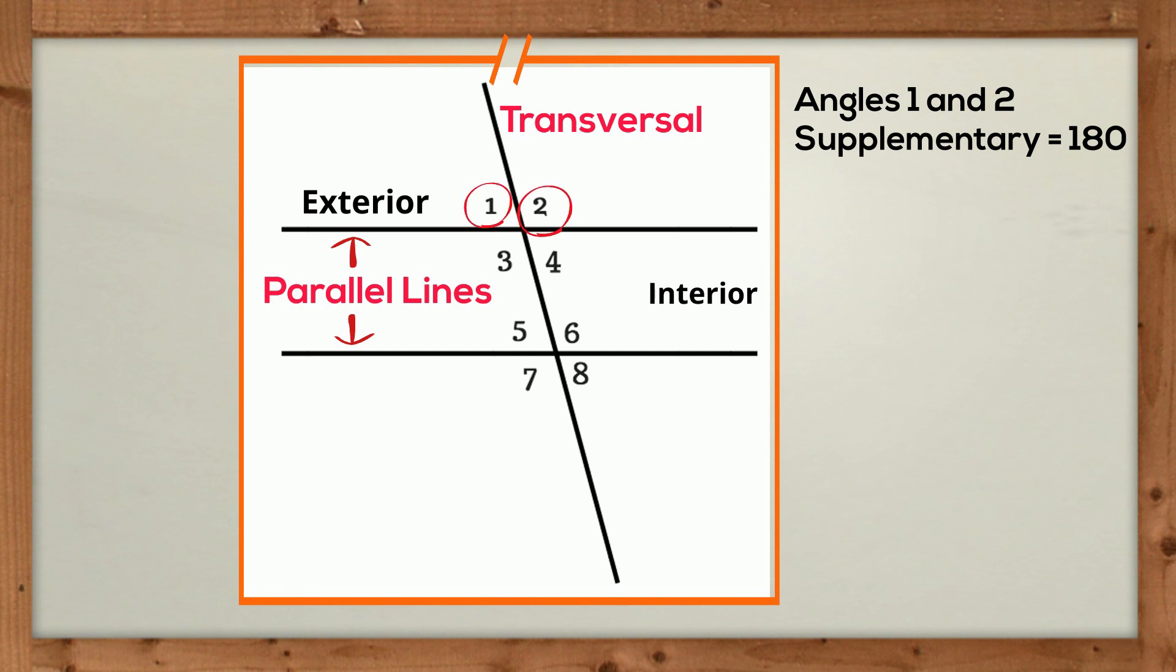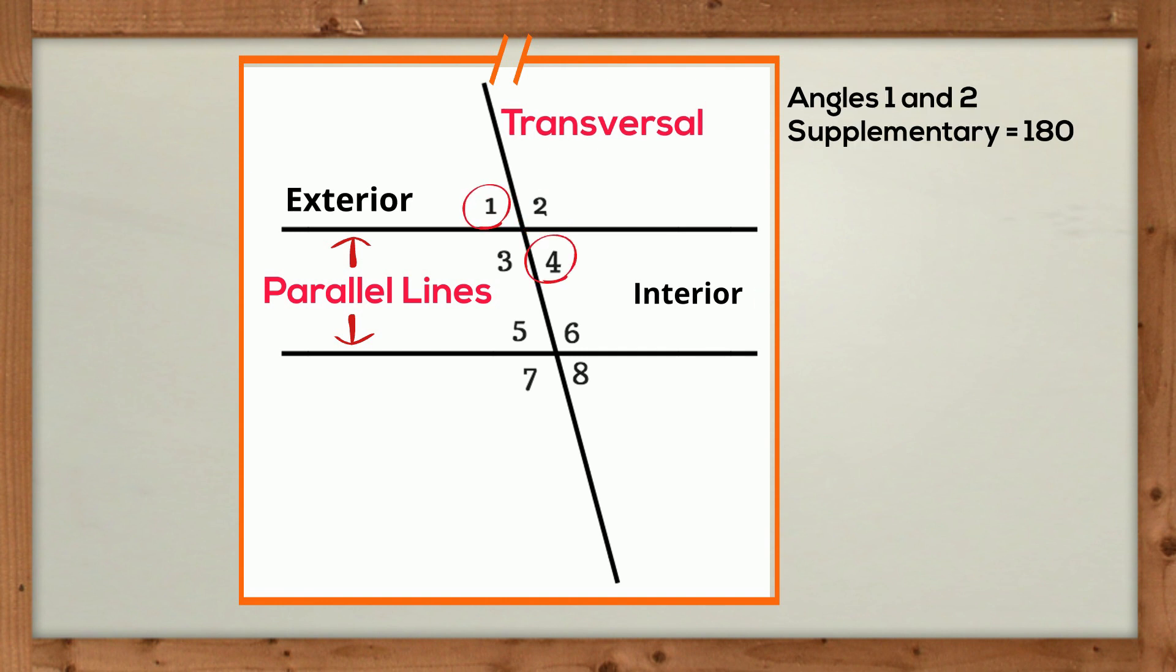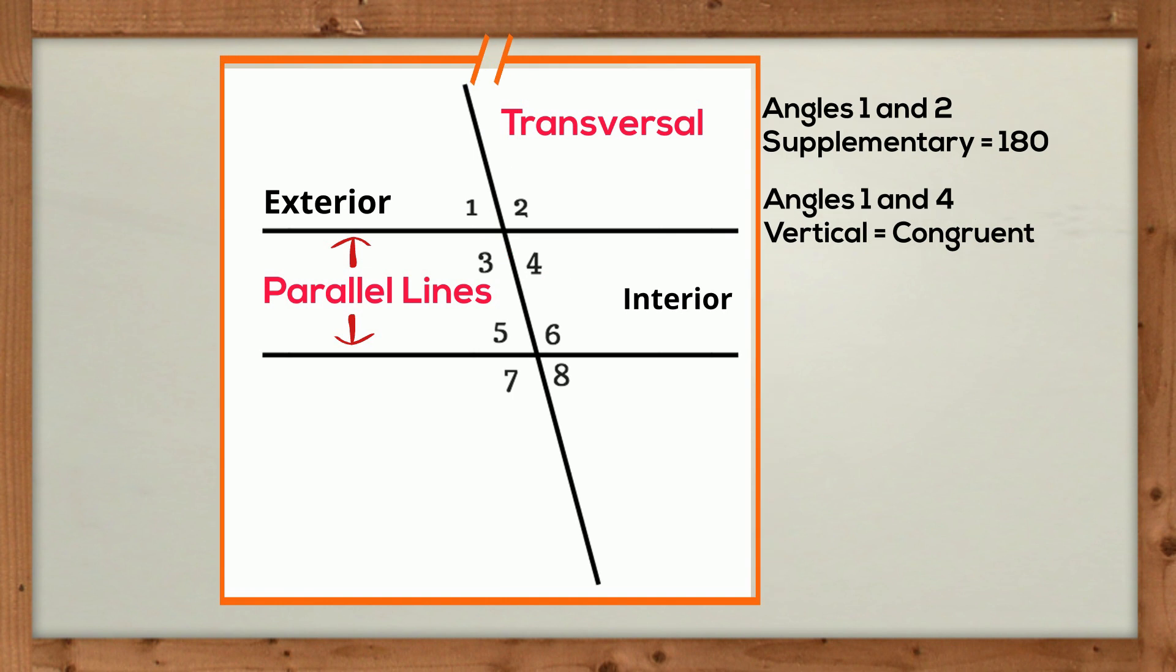First, angles 1 and 2 are next to each other, so these angles are supplementary, and their angle measures added together equal 180 degrees. Angles 1 and 4 are called vertical angles, and their angle measures are congruent or equal.